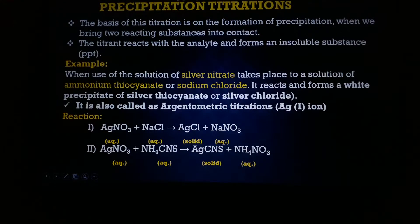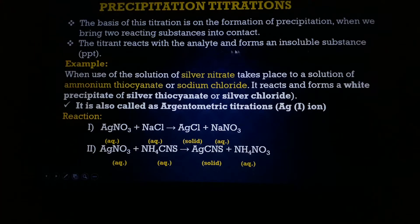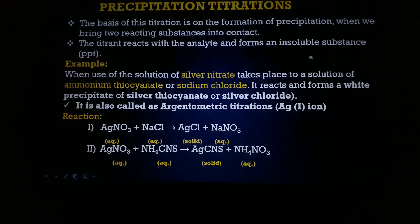What is precipitation titration? The title itself says it — formation of a precipitate is your end point. The basis of this titration is the formation of a precipitate when we bring two reacting substances into contact. The titrant reacts with the analyte and forms an insoluble substance called a precipitate (PPT), which indicates the end point of the titration.